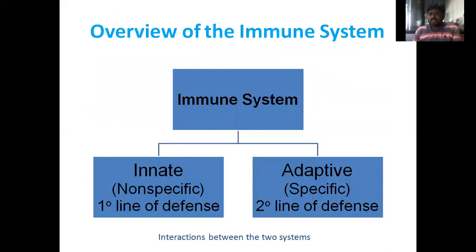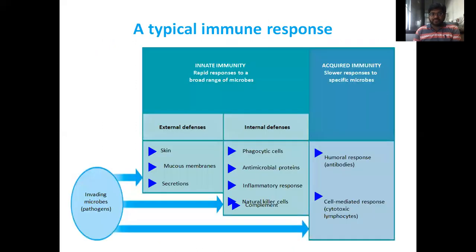Overview of the immune system: there are two types. The first is innate immunity, known as the non-specific first-line defense. The second is adaptive immunity, known as the specific second-line defense. This is the chart of a typical immune response. Innate immunity provides rapid responses to a broad range of microbes, with two types of defense systems: external and internal.